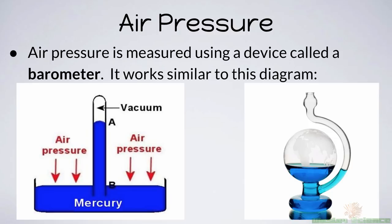We can read air pressure with a barometer. Barometers come in a variety of forms. The one described here works like this: when the liquid in the spout is higher than in the globe, that signifies lower air pressure; when air pressure is higher, the liquid in the spout appears lower than in the globe. Older barometers used mercury in a vacuum — when air pressure pushed down, it caused the mercury to rise. Higher liquid level means lower pressure, and lower liquid level means higher pressure.